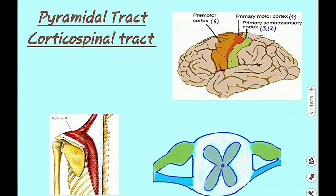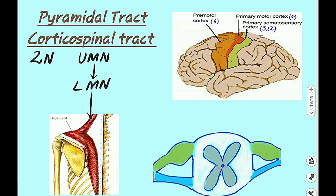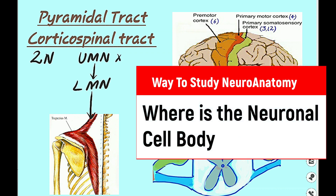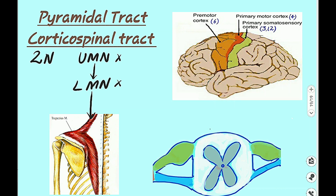The pyramidal tract, or corticospinal tract, consists of two neurons: the upper motor neuron and the lower motor neuron. The upper motor neuron's destination is the lower motor neuron, and the lower motor neuron's destination is the skeletal muscle. The upper motor neuron cell body is present in the primary motor cortex, which is area 4, and also in the premotor cortex, which is area 6 — we can say motor cortex area 4–6.